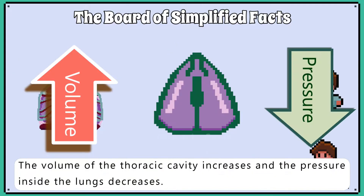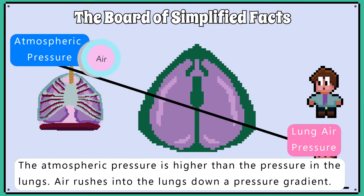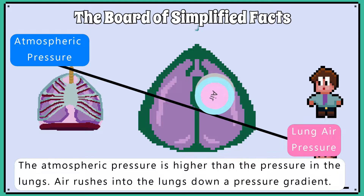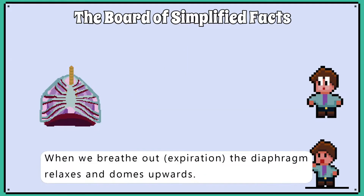The volume of the thoracic cavity increases and the pressure inside the lungs decreases. The atmospheric pressure is higher than the pressure in the lungs, so air rushes into the lungs down a pressure gradient.